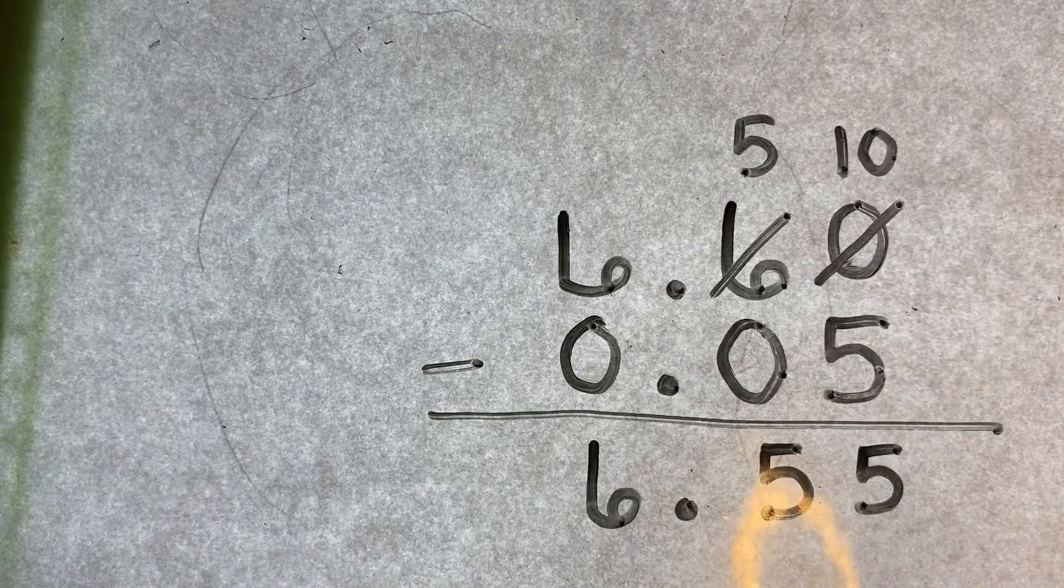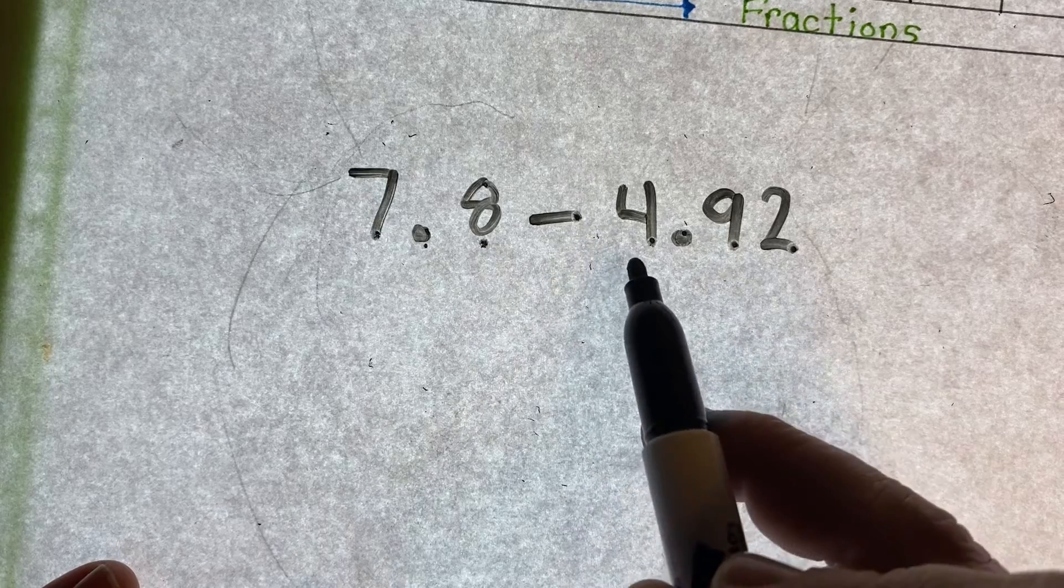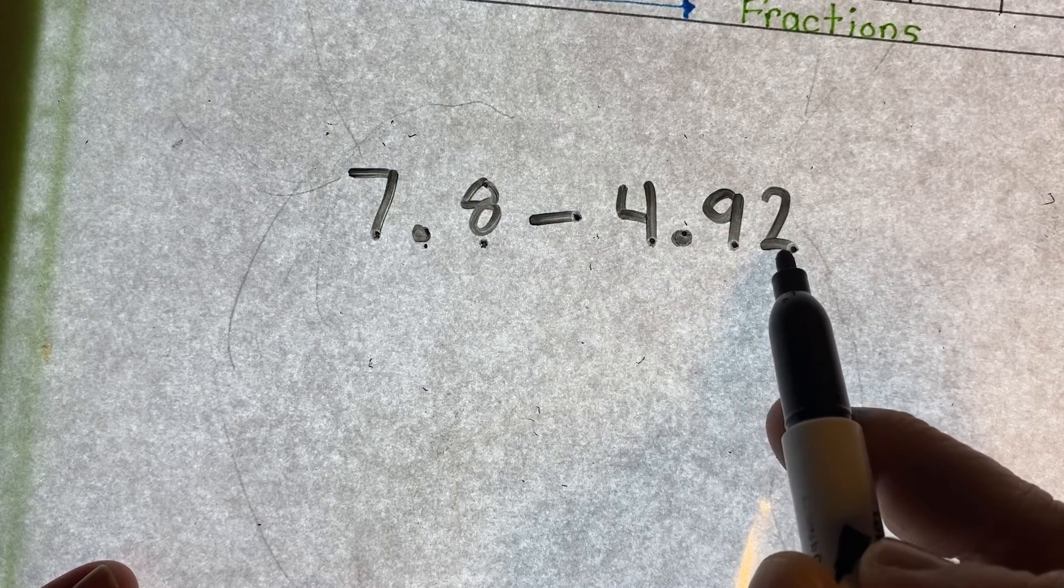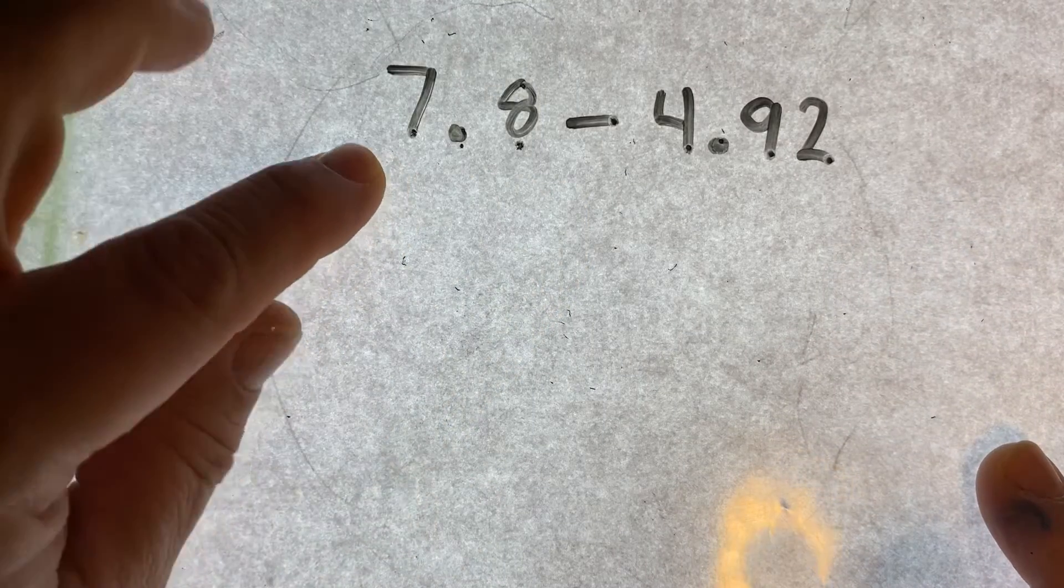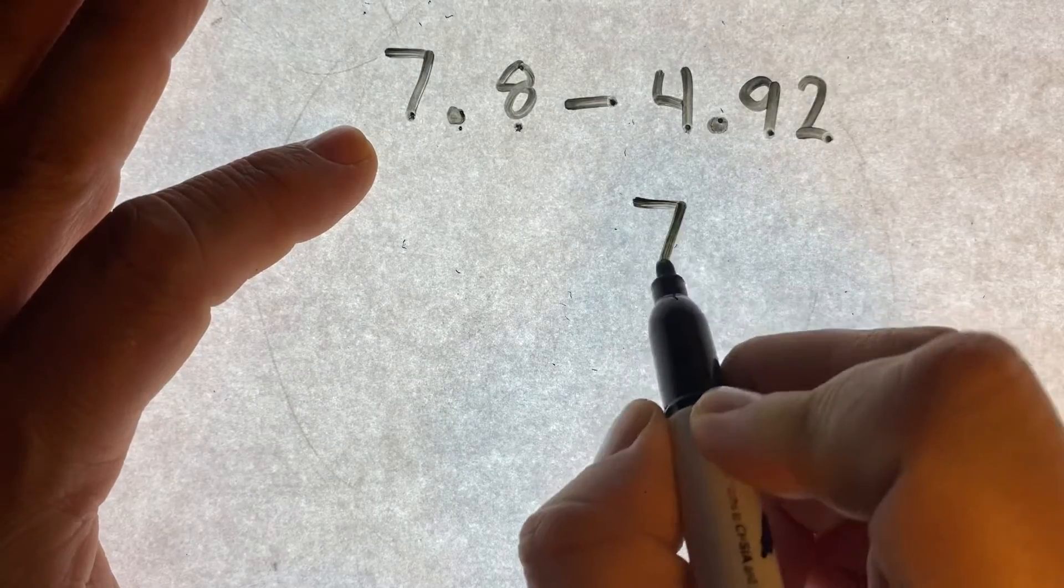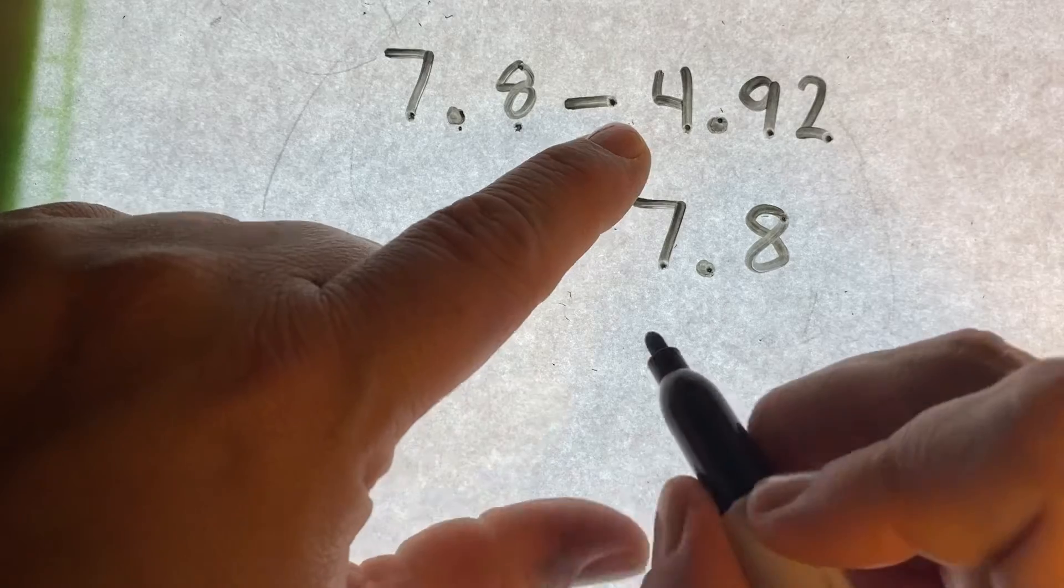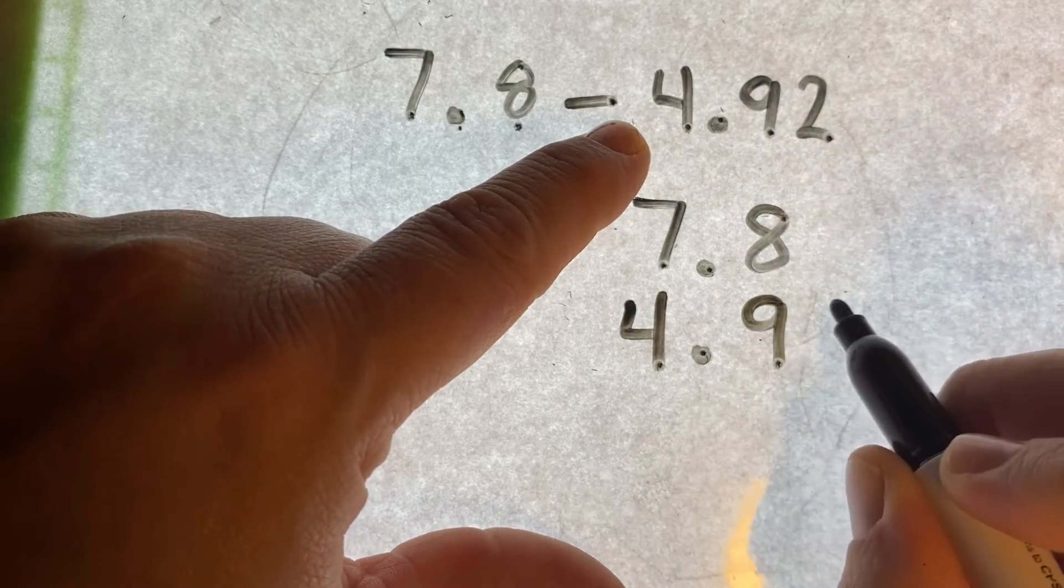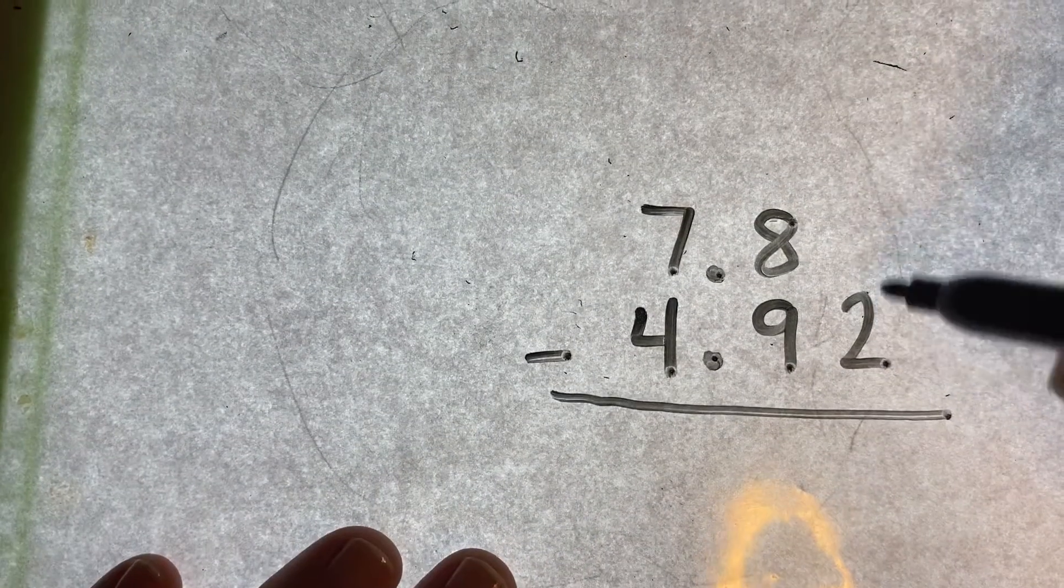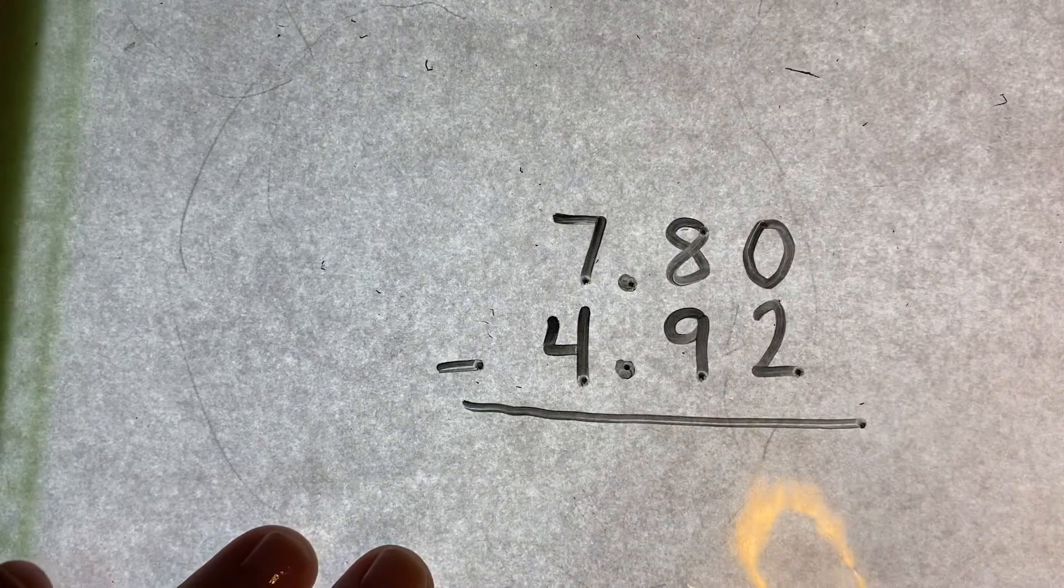But one that might be a little bit more difficult. Let's look at one more that's a little bit more difficult. Seven and eight tenths minus four and ninety-two hundredths. I set it up. Here's the number I'm starting with. This is all I have. I'm not getting any more than this. Seven and eight tenths. I'm taking away four and ninety-two hundredths. Two hundredths. I don't have anything above the two, so I have to fill it in with a zero. So now this is what I have.